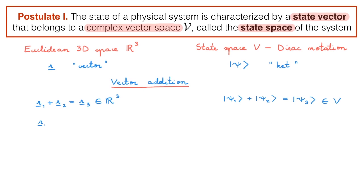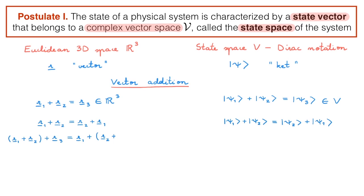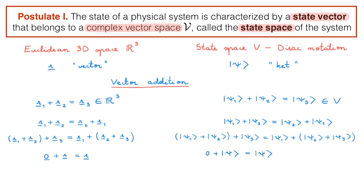Vector addition is commutative, so R1 plus R2 is equal to R2 plus R1, and we have an equivalent expression in terms of kets in state space. Vector addition is also associative, which means that (R1 + R2) + R3 equals R1 + (R2 + R3), and similarly we can write this in state space. There is an identity for vector addition, which is the zero vector, such that zero plus R equals R, and the equivalent in state space is zero plus |ψ⟩ equals |ψ⟩, where the identity is called the null ket. Finally, vector addition has an inverse, so R plus its inverse gives the zero vector, and similarly a ket plus its inverse gives the null ket.